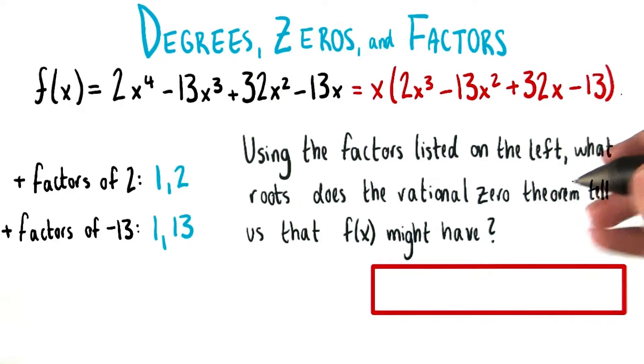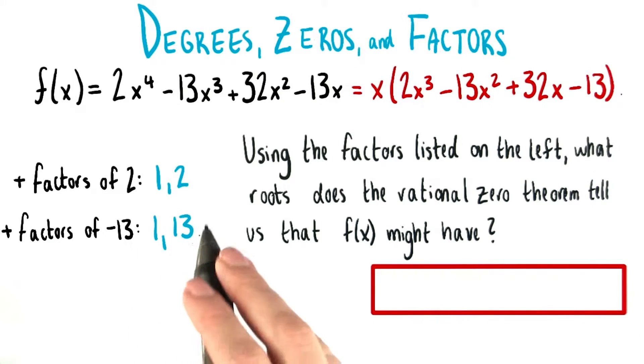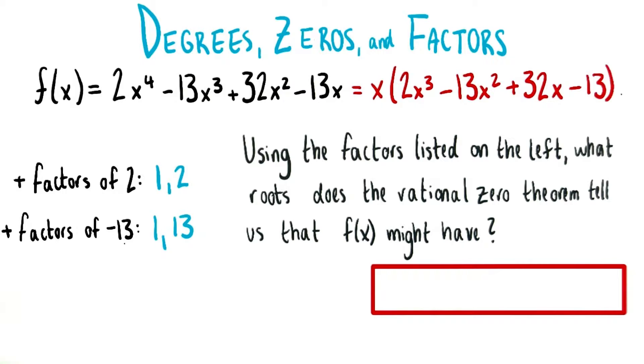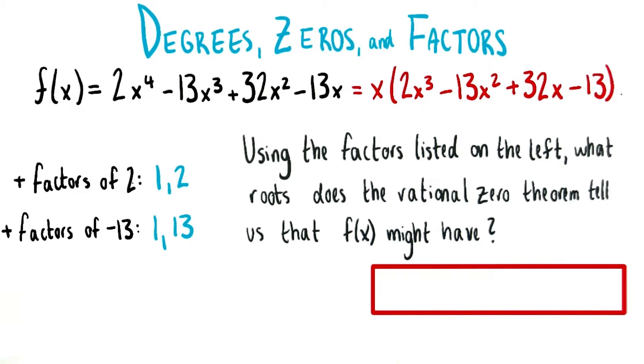To find all these potential zeros, we know that for each one, we're going to take a factor of negative 13 and divide it by a factor of 2.